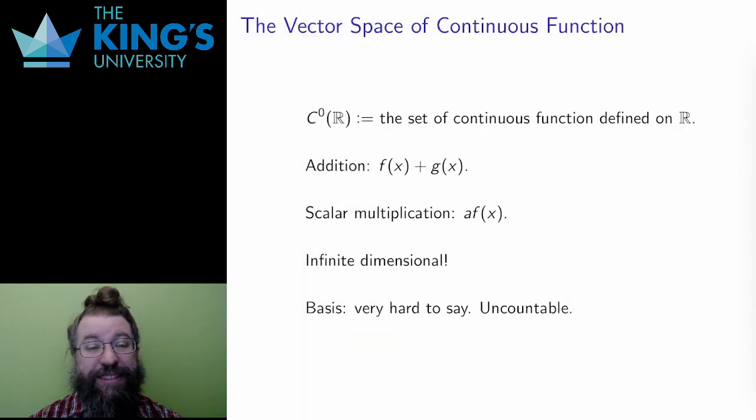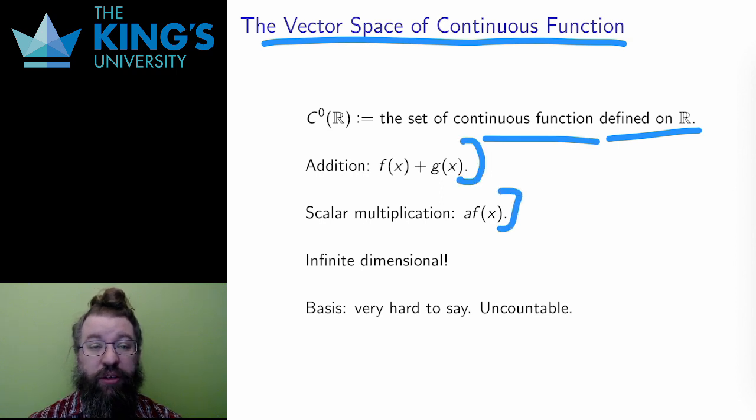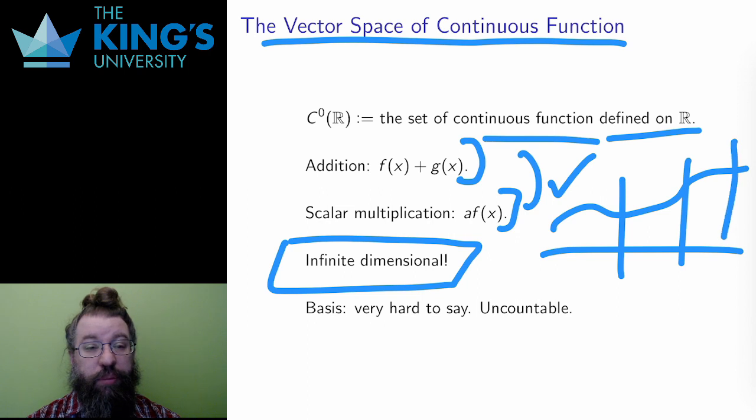Finally, I want to consider the set of all continuous functions defined on all of R. I can add continuous functions, multiply them by scalars, and the multiplication is distributive over the addition. This is an abstract vector space. This is an extremely large vector space. Continuous functions have a huge variety. Any connected path I draw that satisfies a vertical line test is the graph of a continuous function. This is certainly infinite dimensional, and I can't even imagine thinking about a basis.